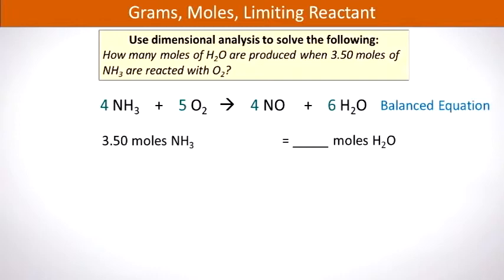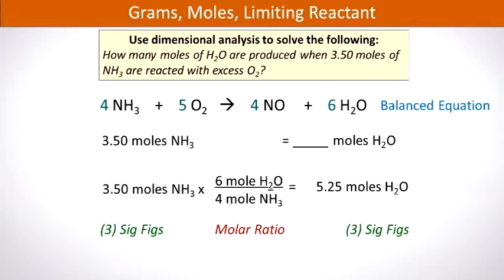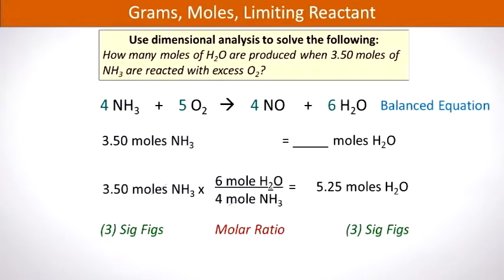Therefore we write our given 3.50 moles of ammonia with the expectation that we're looking for moles of water. We set up a dimensional analysis whereby moles of ammonia must be in the denominator, and we relate moles of ammonia to moles of water using the balanced equation. Within the balanced equation we have six moles of water and four moles of ammonia, so we substitute these into our conversion factor ratio. We calculate and obtain 5.25 moles of water — three sig figs because the given had three sig figs.